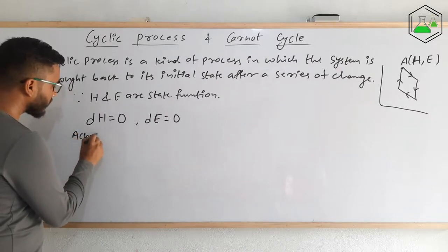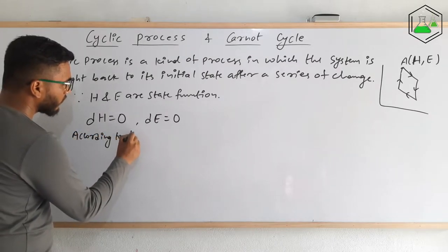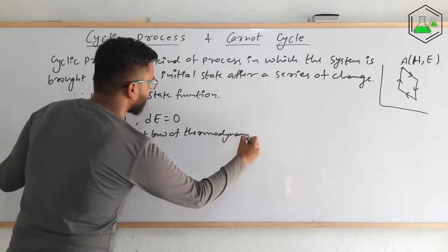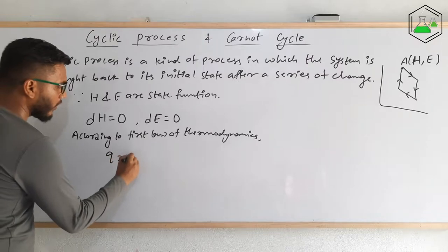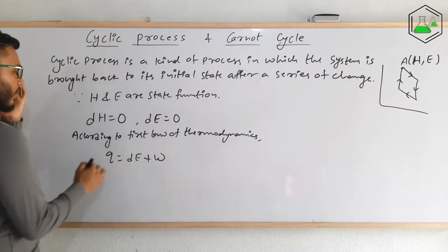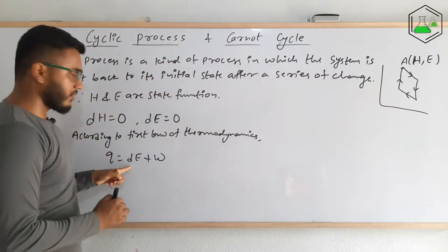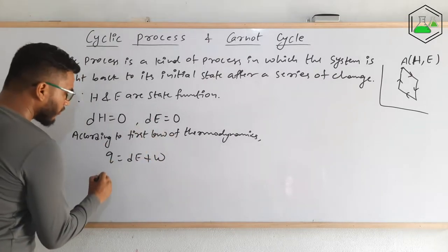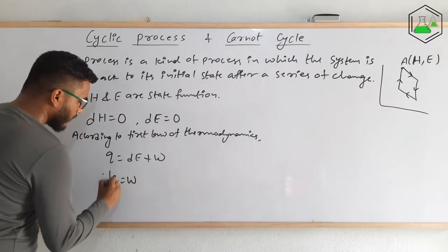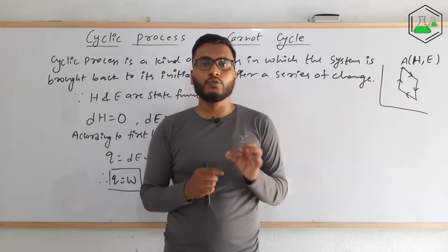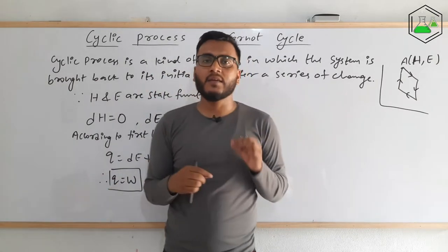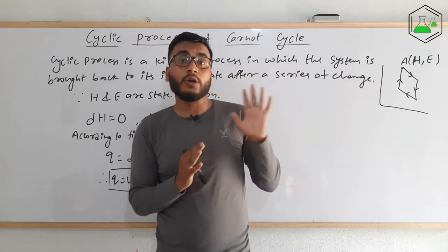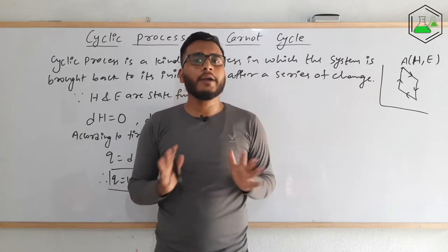According to the first law of thermodynamics: Q = ΔE + W, where Q means total heat energy supplied to the system, ΔE means change in internal energy, and W means work done. Since ΔE is zero, therefore Q = W. So for a cyclic process, all the heat energy supplied is utilized to do work. This is the case for maximum convertibility of heat energy into work — the ideal case to make a Carnot heat engine with 100% efficiency.